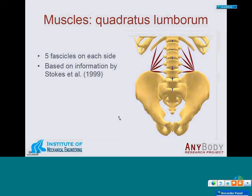The next muscle is the quadratus lumborum, modeled using information by Stokes et al. from 1999, represented in five fascicles on each side.